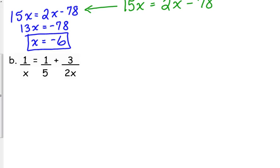Our LCD, I look at the numbers first. 2 and 5, that's the boat we were just in. That's 10. And then we have x in two of the denominators. We don't need two x's. We just need one of them, because the purpose, just like with complex fractions, is to make all the smaller denominators disappear.